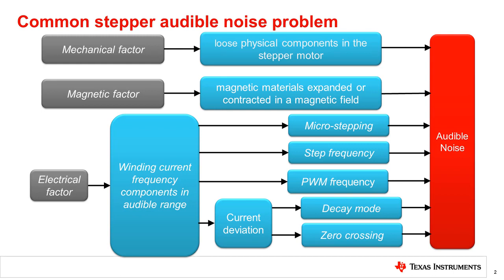Electrical noise is caused by the winding current frequency components in the 20 Hz to 20 kHz audible range. There are several reasons that could affect the winding current frequency components: micro step pin setting, step frequency setting, PWM frequency setting, and current deviation from the current reference setting.